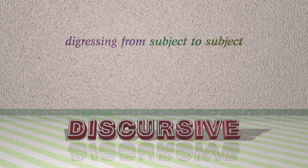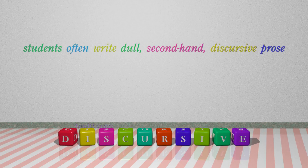Number 5: Discursive. Which means digressing from subject to subject. For example: Students often write dull, second-hand, discursive prose.